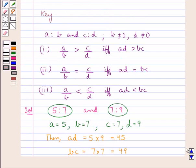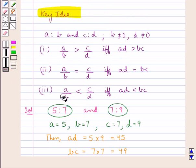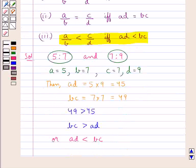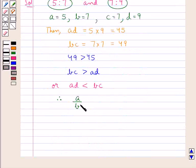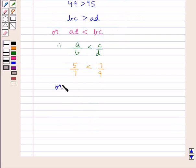Now, from the third condition of the comparison of ratios we find that A upon B is less than C upon D if and only if AD is less than BC. Now that we have got that AD is less than BC, therefore we can say that A upon B is less than C upon D. That is we have 5 upon 7 is less than 7 upon 9. Or we can say the ratio 7 is to 9 is greater than the ratio 5 is to 7.